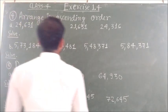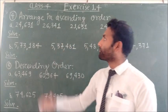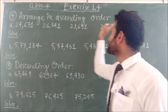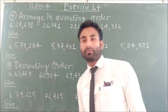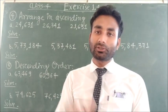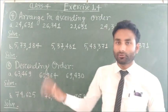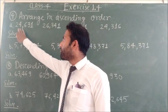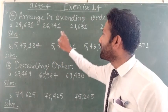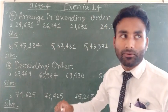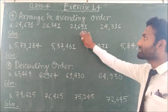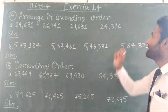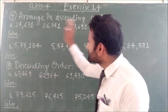Next question in Exercise 1.4, question number four: arrange in ascending order. Ascending order means increasing order, from smallest to largest. Question number one: 24,631, 26,341, 21,631, and 24,360. Which is the smallest number?